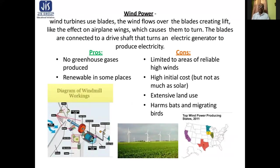Wind turbines use blades — wind flows over the blades creating lift, like the effect on an airplane wing, which causes them to turn. The blades are connected to a drive shaft that turns an electric generator to produce electricity. Advantages include no greenhouse gas production and being renewable in some places. Disadvantages include being limited to areas of reliably high winds, high initial costs, extensive land use, and harm to birds and migrating species. Wind power is installed in many parts of the world, including India.